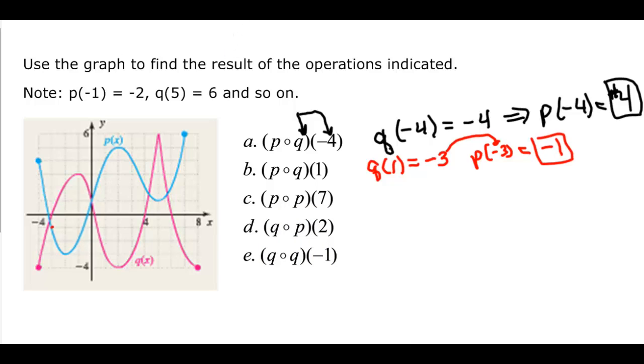Alright, try another one. p of 7, you can put a function within itself, so p of 7, so I come over here to 7, and the p is the blue, that's equal to 6, and then that means that I want to find p of 6, because remember this goes in here, and p of 6, 4, 5, 6, is going to give me a value of 2.